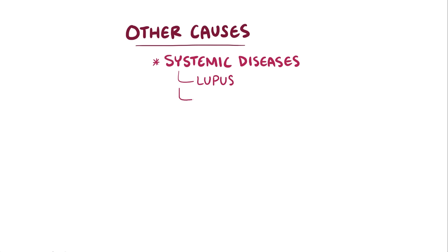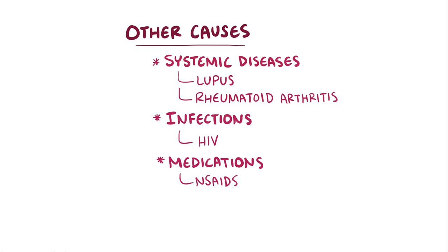Although diabetes and hypertension are responsible for the vast majority of chronic kidney disease cases, there are other causes as well, including systemic diseases like lupus and rheumatoid arthritis, which can also cause glomerulosclerosis. Other causes though include infections like HIV, as well as long-term use of medications like NSAIDs, and toxins like the ones in tobacco.